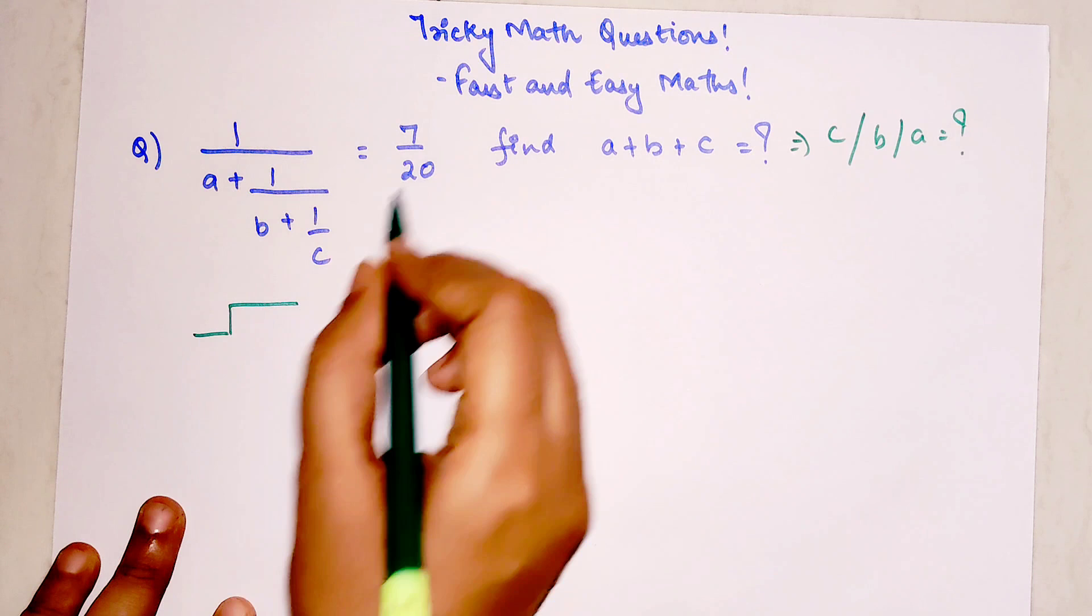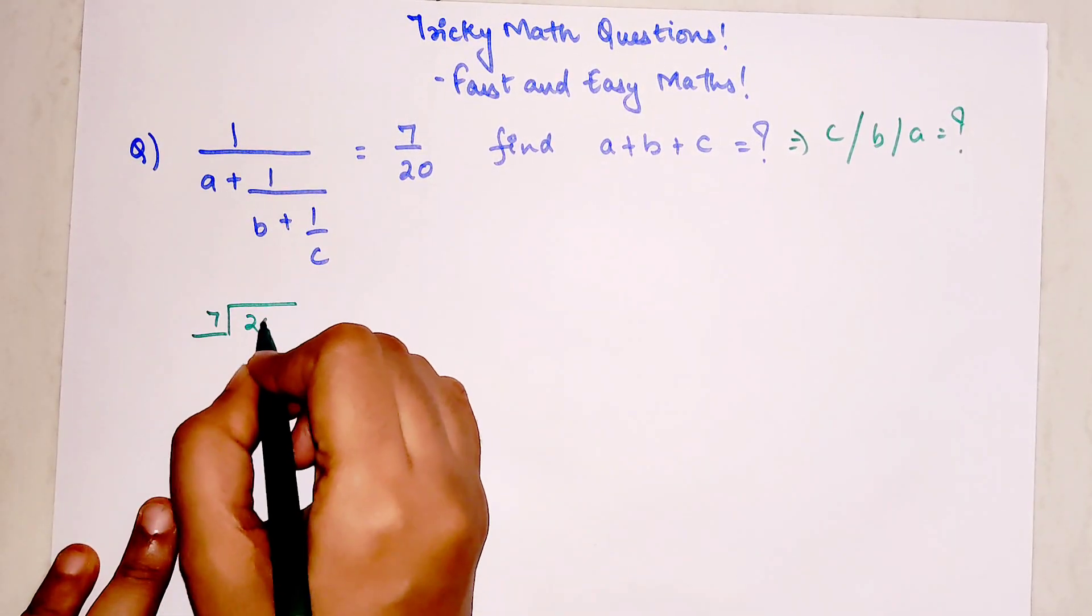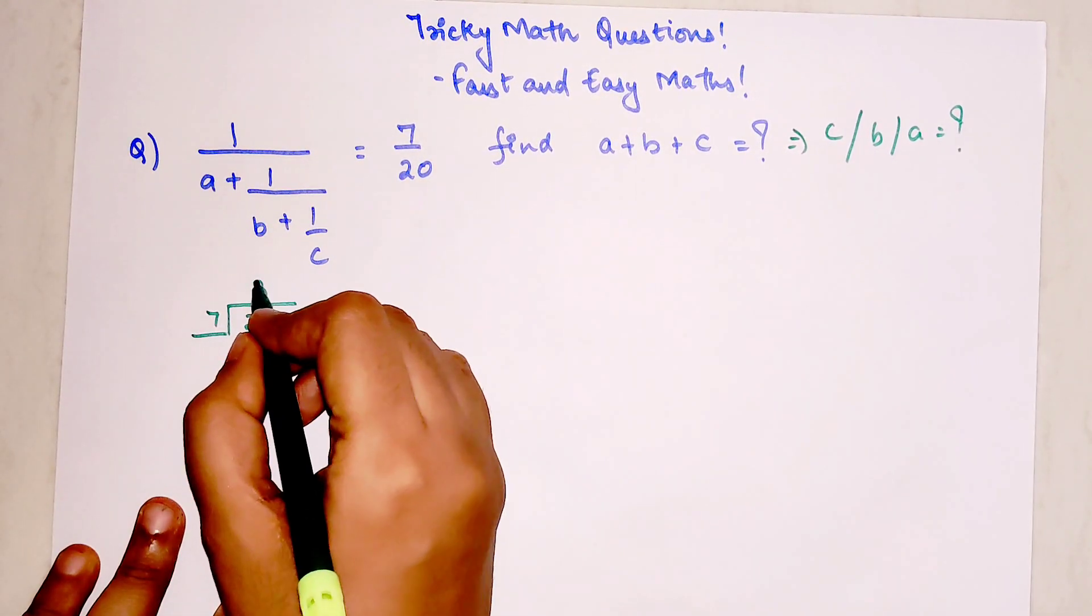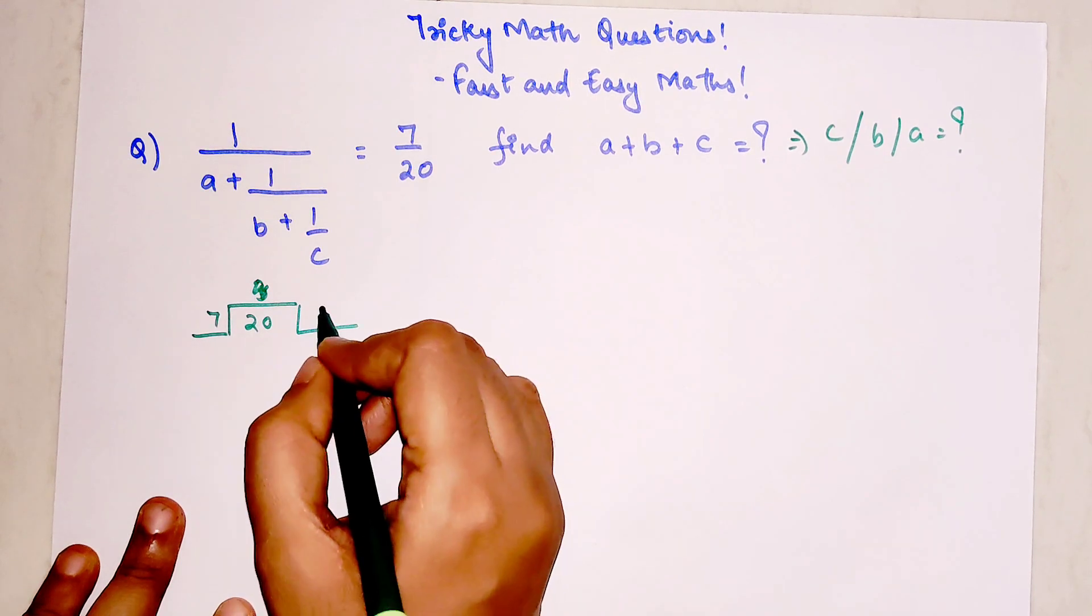All you have to do is just divide this, so 7 by 20. We will write the quotient here, it is easier that way.